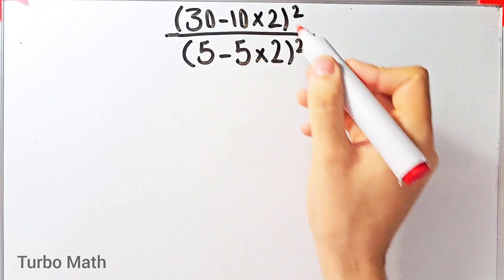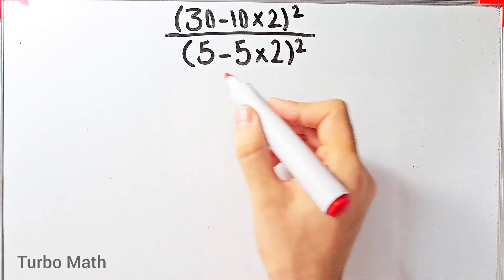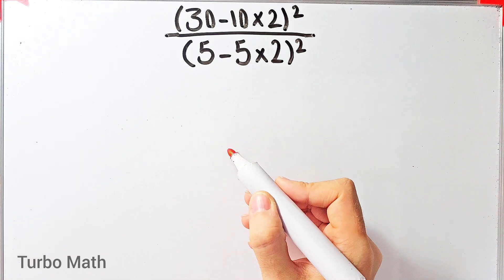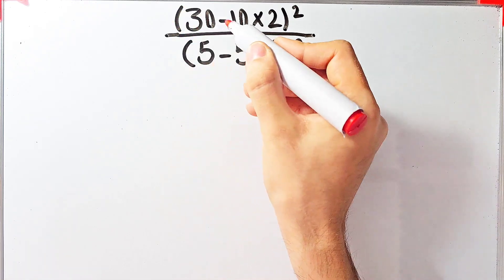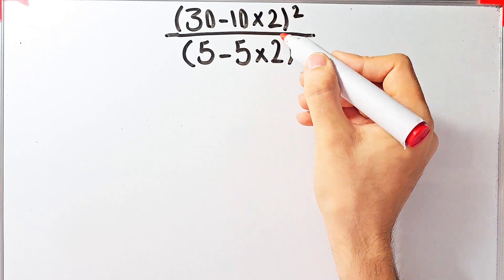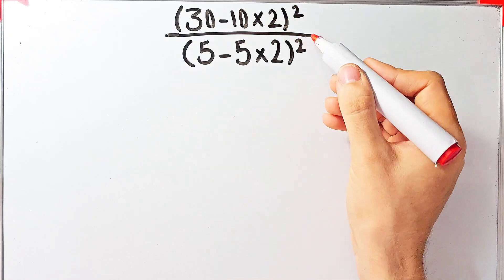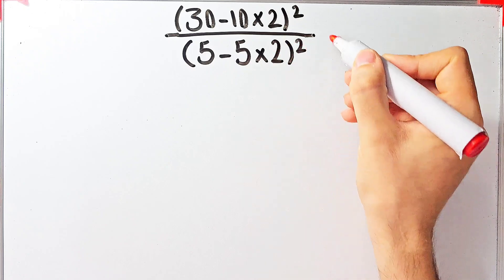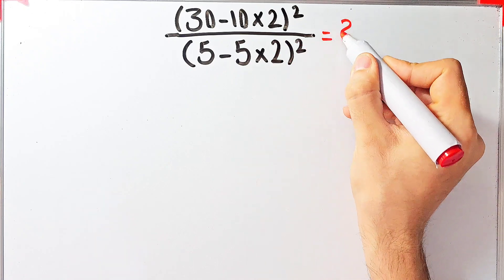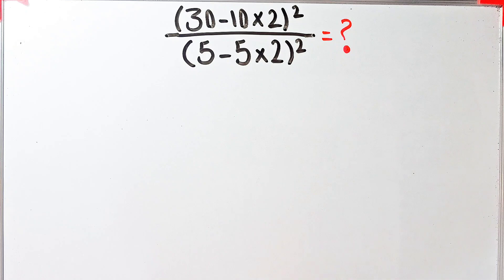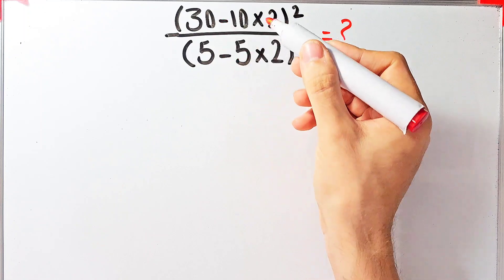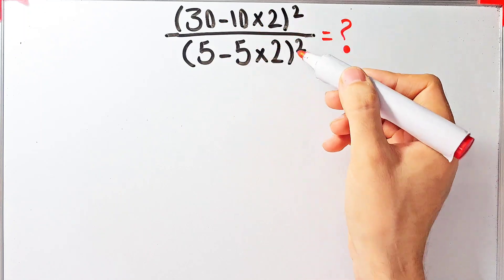Hi friends, welcome to Turbo Math channel. Many people when they see this question don't know which operation to do first, so they might get it wrong. The question is: 30 minus 10 times 2, all to the power of 2, divided by 5 minus 5 times 2, all to the power of 2. What is the answer? Can you solve it?